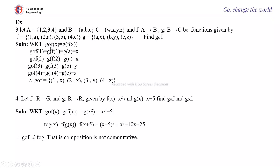We know that Gof(x) = G(F(x)). So G(F(1)) = G(a) = x. Likewise for the remaining elements of A: Gof = {(1,x), (2,x), (3,y), (4,z)}.